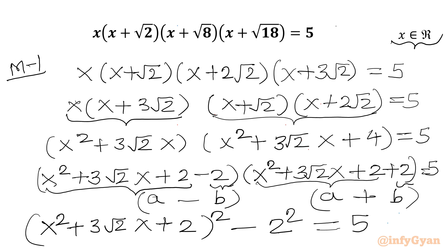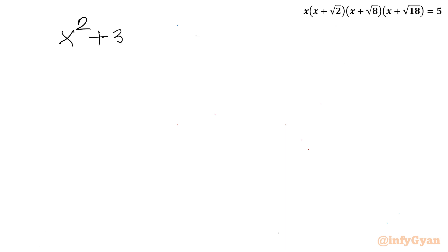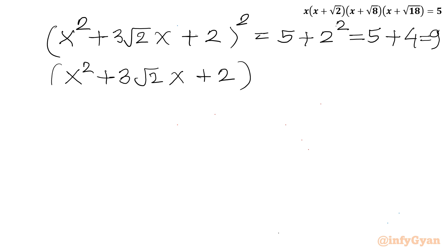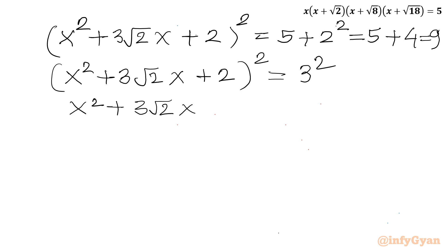Now I add 2² (which is 4) to both sides. So (x² plus 3√2·x plus 2)² equals 5 plus 4, which is 9. So (x² plus 3√2·x plus 2)² equals 9, which is 3². Now taking square roots of both sides: x² plus 3√2·x plus 2 equals plus or minus 3.